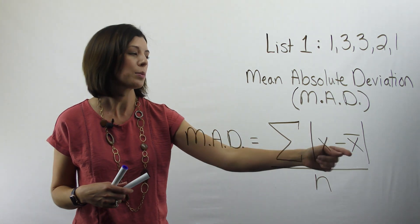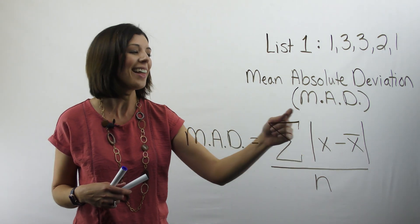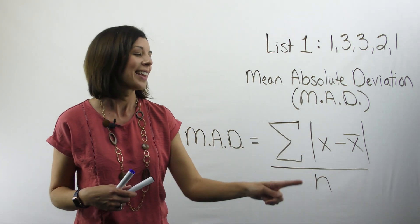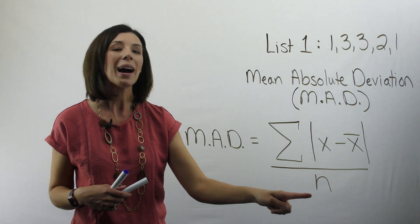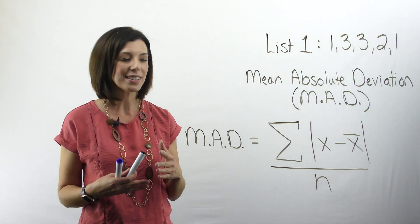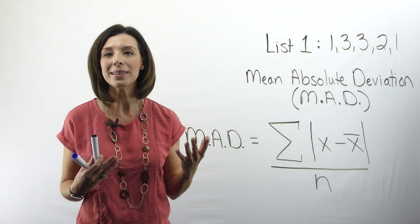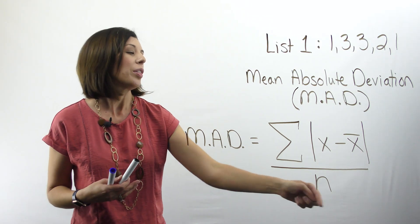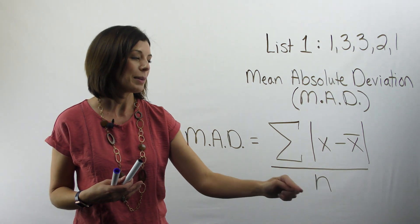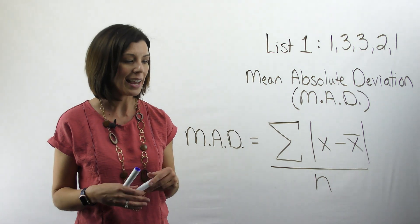So I need to take each data point, subtract the mean, take the absolute value of that, and then add them all up. Then I need to divide by n, and that just represents the number of data points in the sample. So this is the number of data points in my sample. I'm going to divide it by that n.